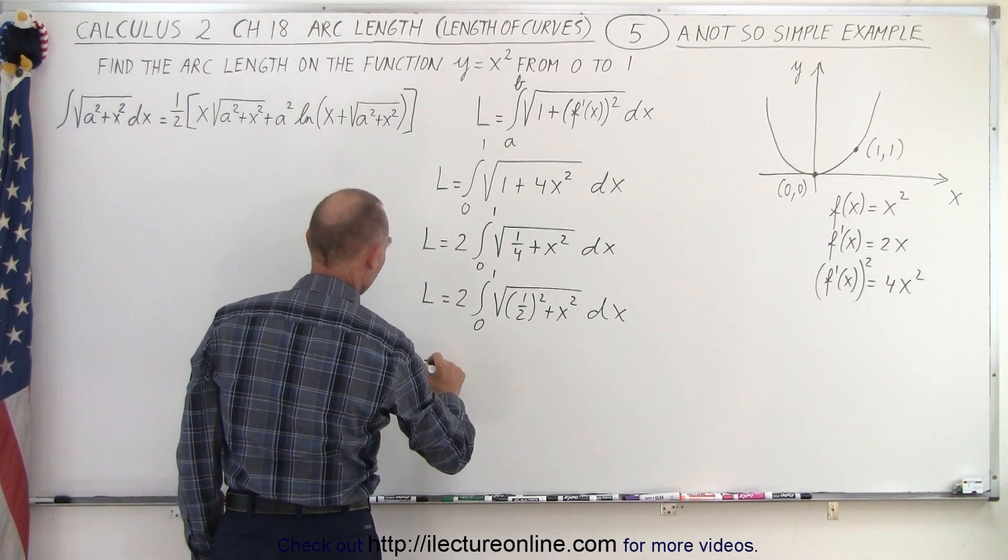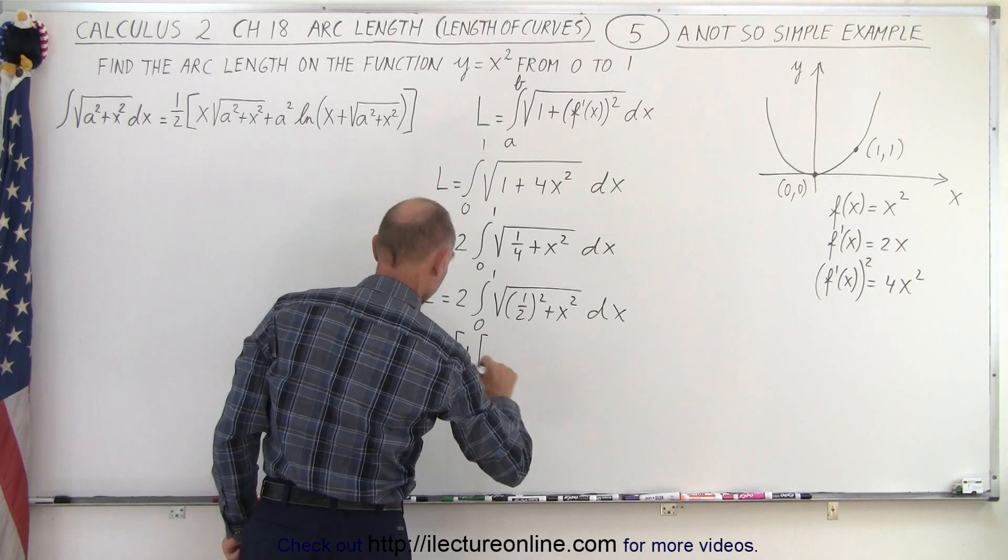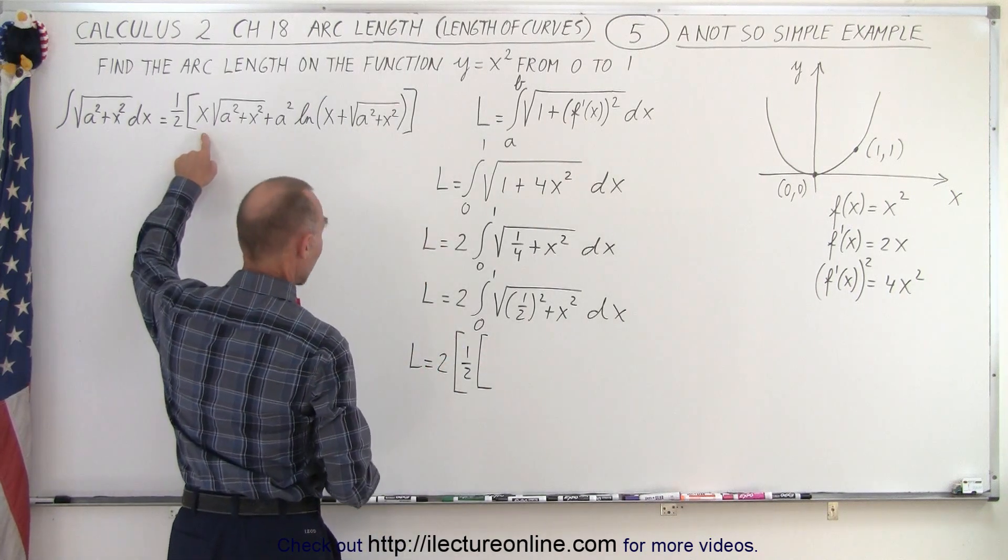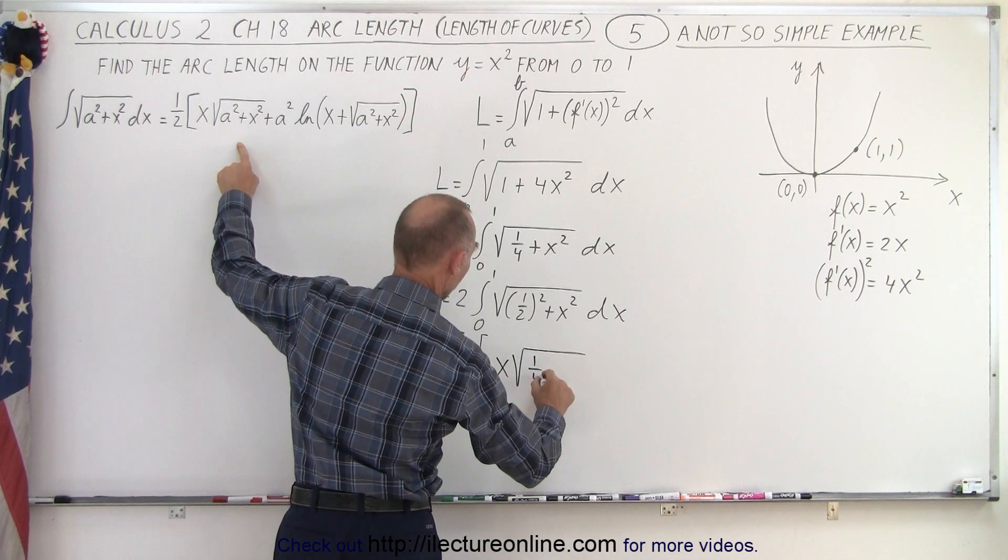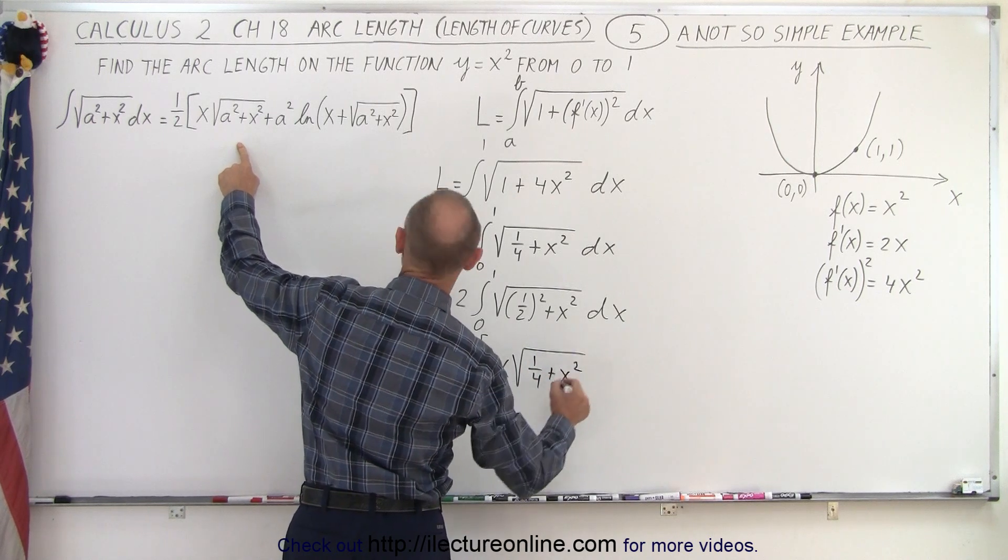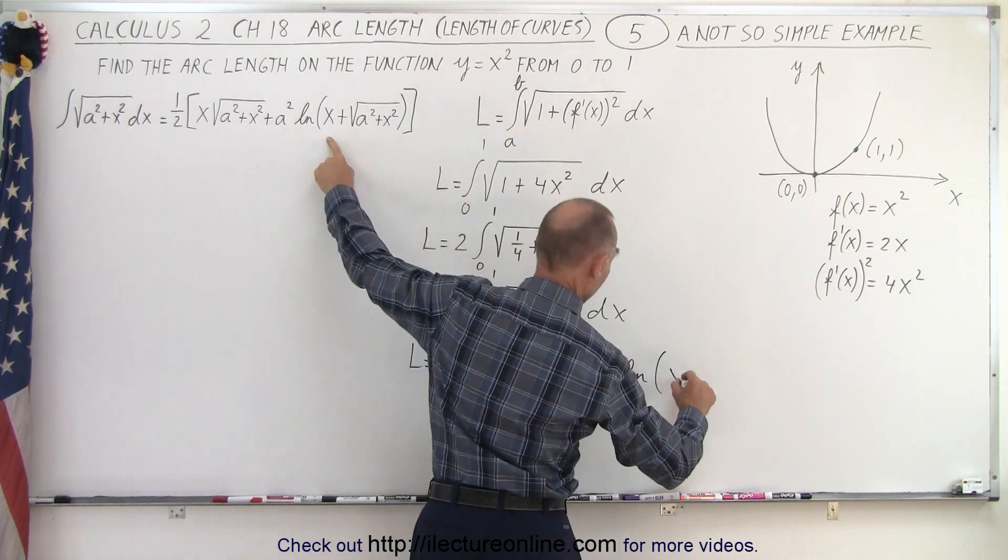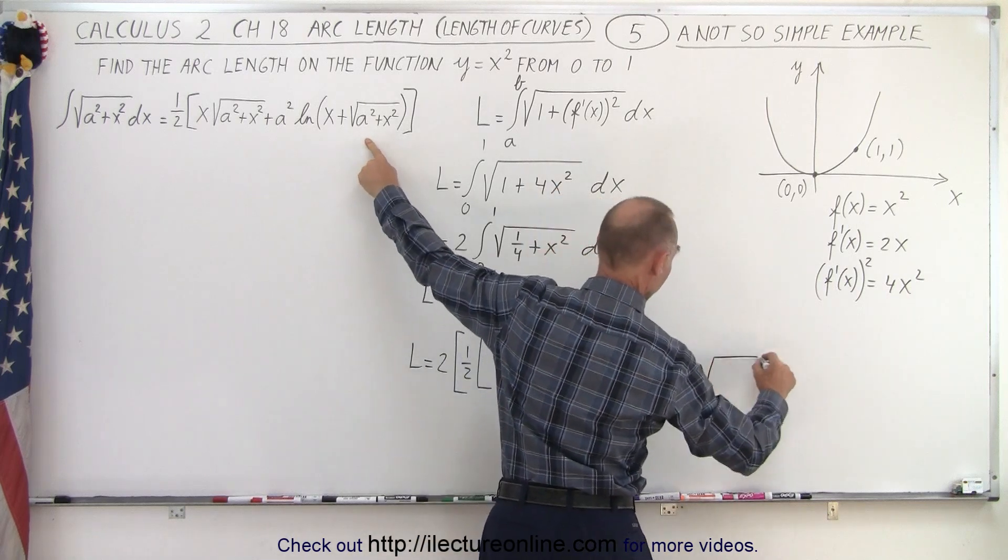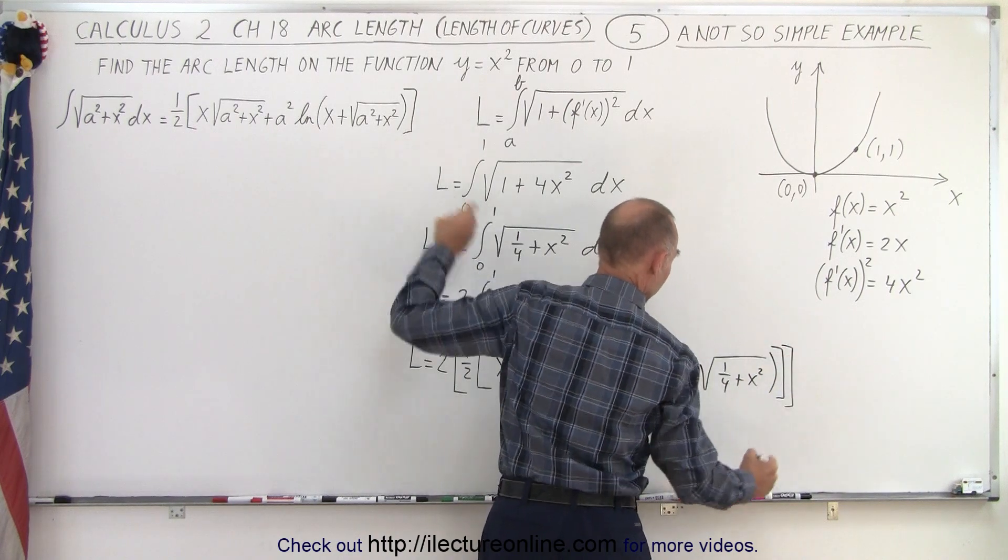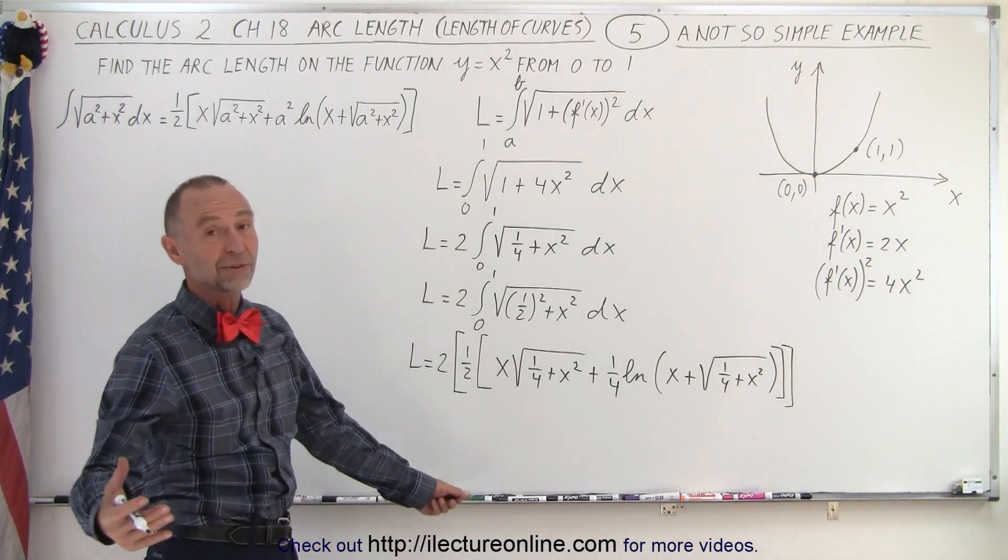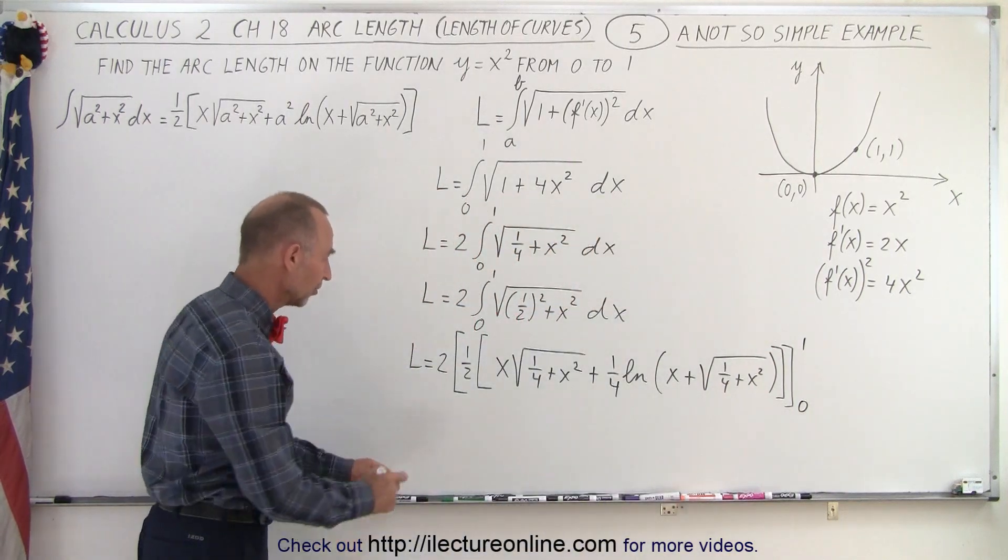So let's write that down then. So we have L is equal to 2 times 1/2, and of course they're going to negate one another, times x, now x is here, times the square root of a squared, which is 1/4 plus x squared. Plus a squared, which is 1/4, times the natural log of the quantity x plus the square root of a squared, which is 1/4 plus x squared like this. Then we have to have the closing brackets. And now we simply have to evaluate that from 0 to 1. Of course, these cancel each other out.